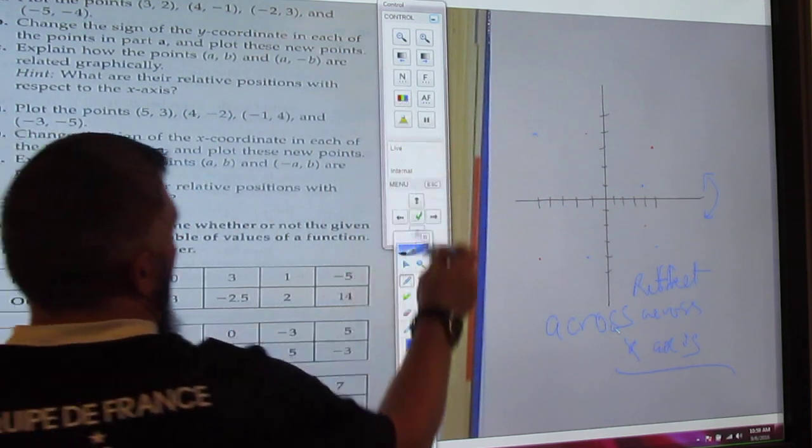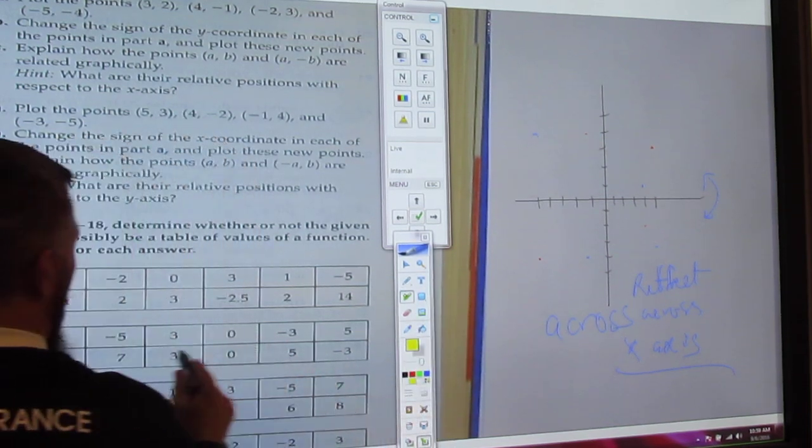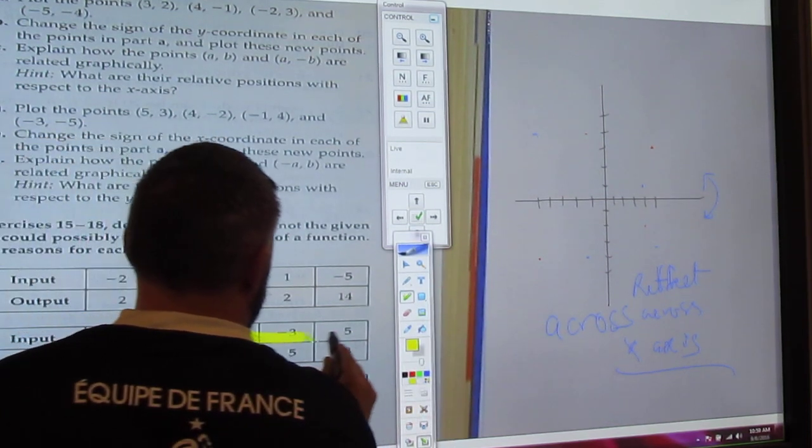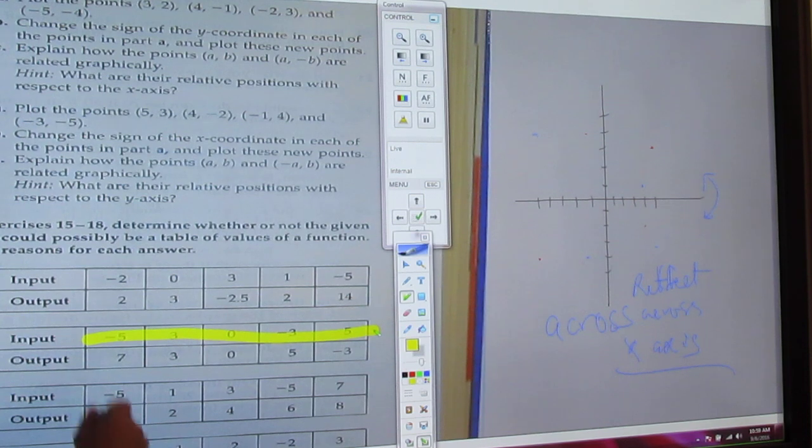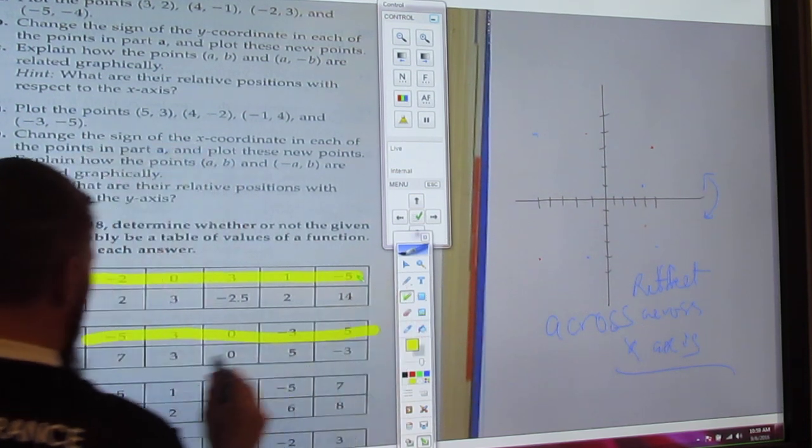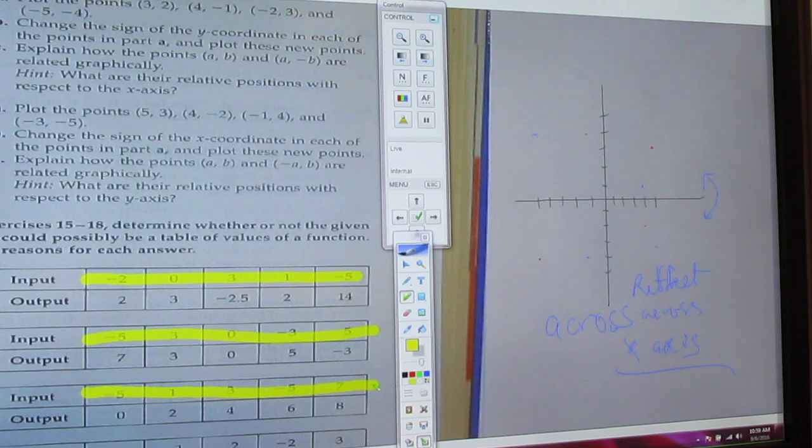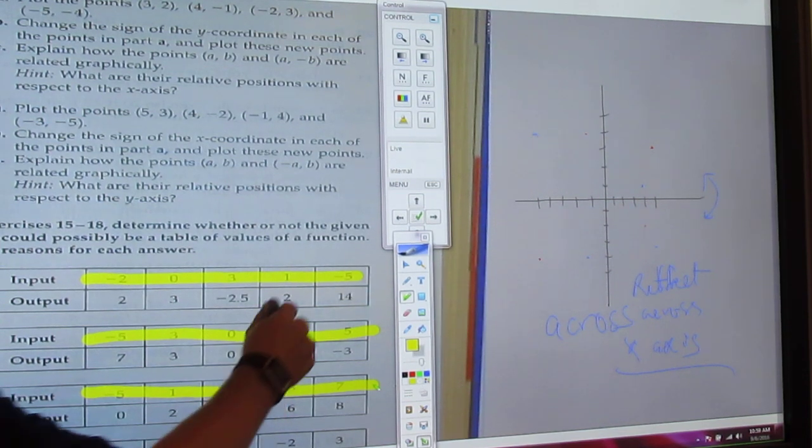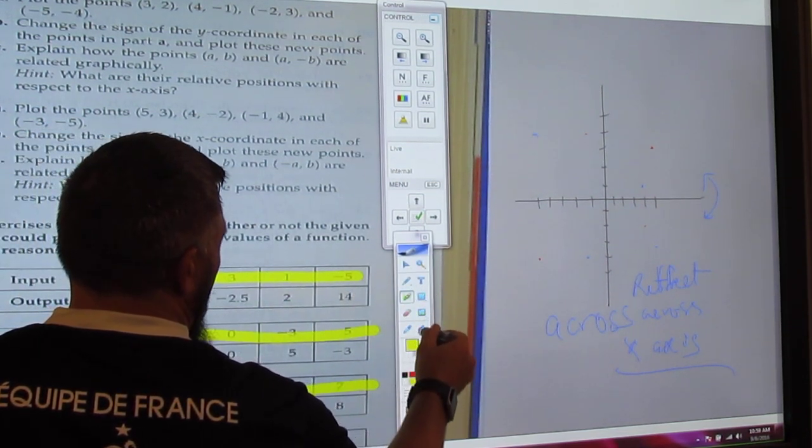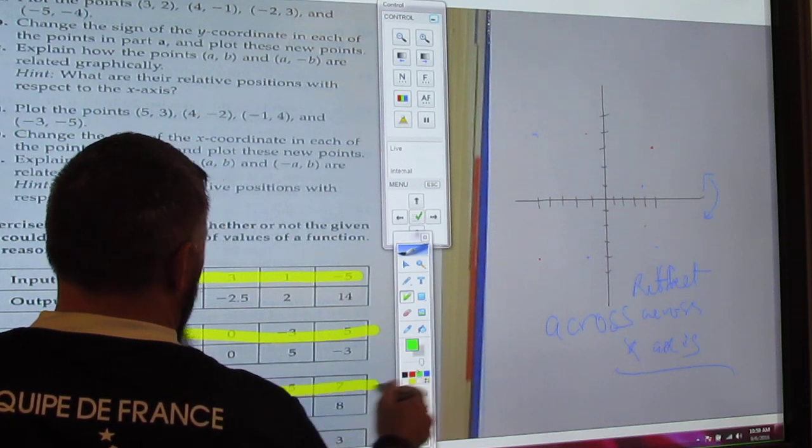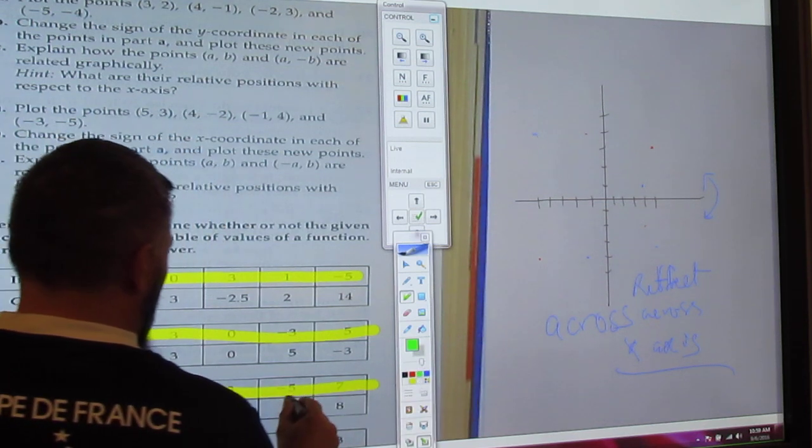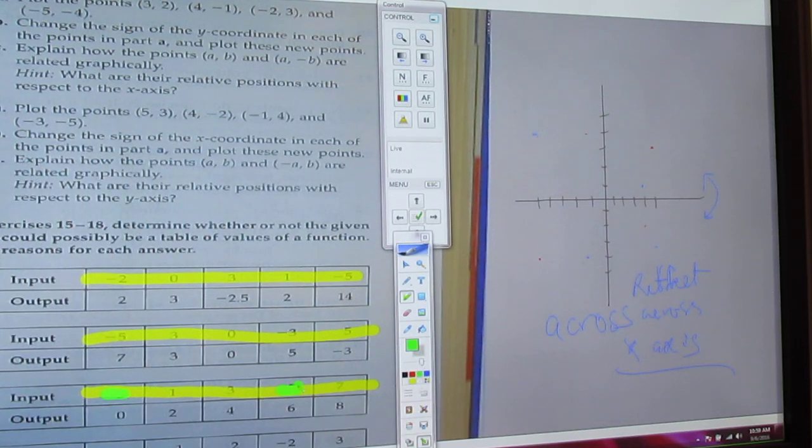So in other words does x come up twice in here? Does x come up twice in here? Does x come up twice in here? We notice right away that it comes up twice here and here.